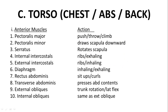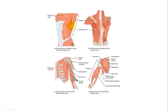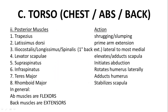Moving on to the torso, you have the pectoralis muscles across the chest, which are important for pushing, throwing, climbing, and immobilizing the scapula. The serratus muscles, and the internal and external intercostals and diaphragm are important for inhaling and exhaling. The rectus abdominis, transverse abdominis, and external and internal obliques are all important for abdominal movements. You can see the pectoralis major muscle and the serratus muscles here.